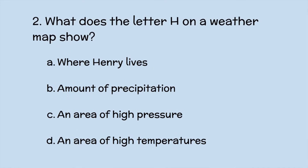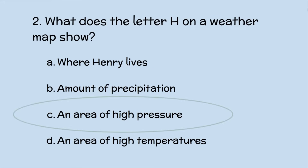Number two: What does the letter H on a weather map show? A — where Henry lives? B — the amount of precipitation? C — an area of high pressure? Or D — an area of high temperatures? If you said C, an area of high pressure, you are correct. Good job.